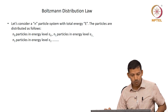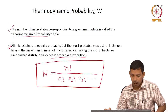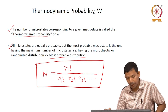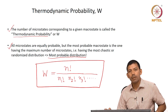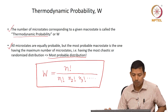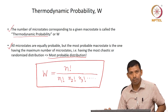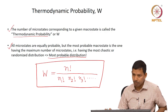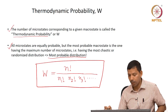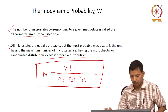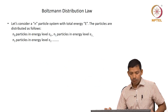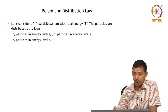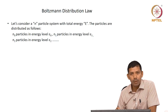So far we have seen the definition of statistical thermodynamics, the difference between thermodynamics and statistical thermodynamics, and we have taken one example for a biological system and defined the distribution of states and thermodynamic probability W. Now let us look at Boltzmann distribution law, a very important law in statistical thermodynamics, and we will derive it.